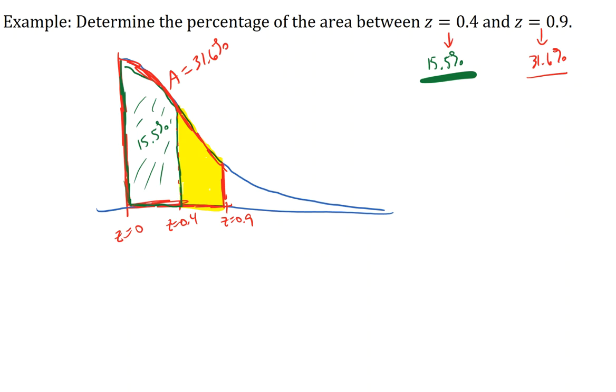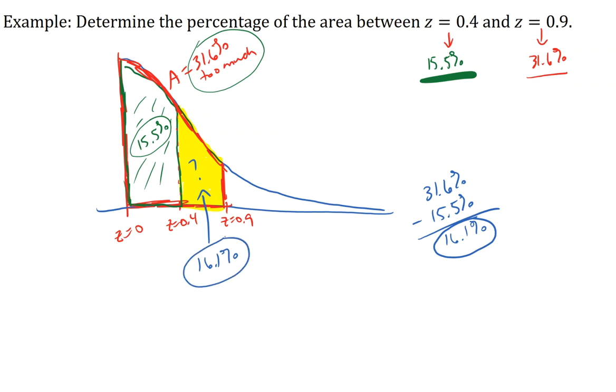So how do I get the area of the yellow region? Well, you can see that 31.6 percent is too big, too much. That's bigger than the area of the yellow region. 15.5 percent is not the yellow region at all. But if I subtract, subtract 15.5 percent from the area that's too big, it's going to leave behind my yellow area. So in this case, we have to subtract the areas. 31.6 percent minus 15.5 percent is 16.1 percent. So the area of the yellow region is 16.1 percent. So that's the percentage of the area between those two z-scores.